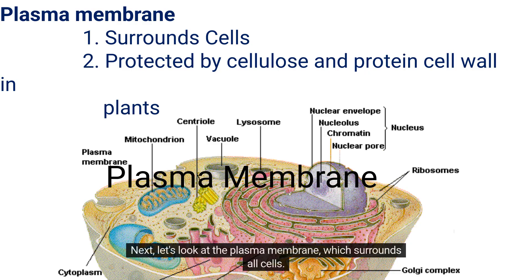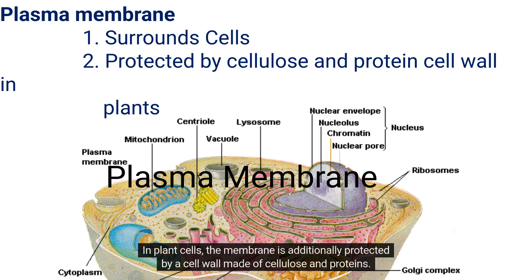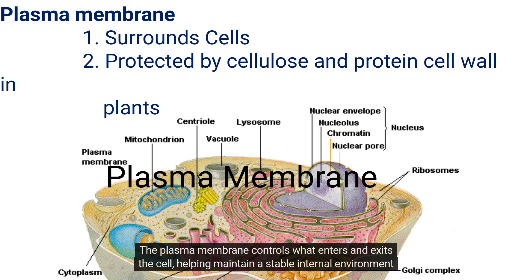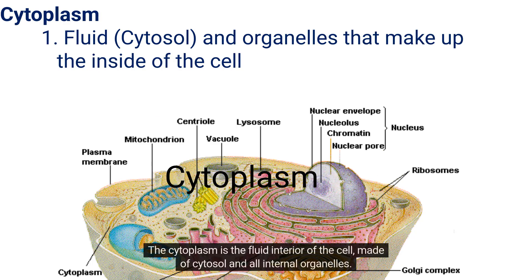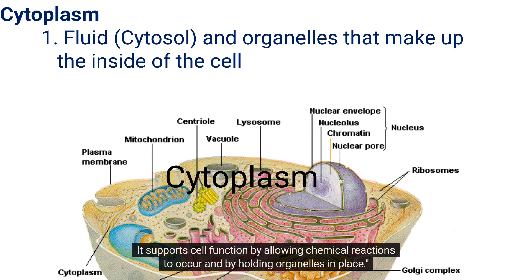Next, let's look at the plasma membrane, which surrounds all cells. In plant cells, the membrane is additionally protected by a cell wall made of cellulose and proteins. The plasma membrane controls what enters and exits the cell, helping maintain a stable internal environment. The cytoplasm is the fluid interior of the cell, made of cytosol and all internal organelles. It supports cell function by allowing chemical reactions to occur and by holding organelles in place.